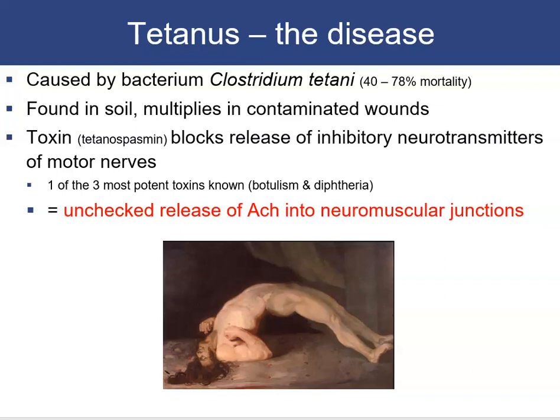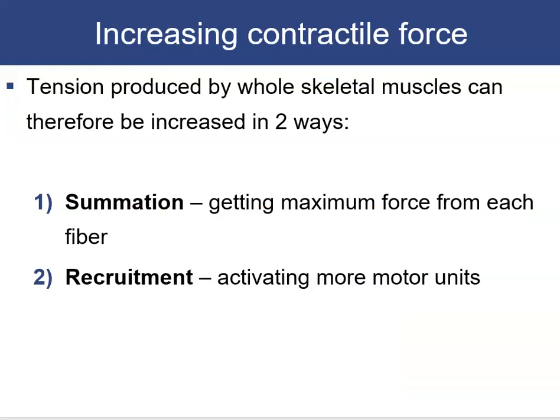Contractile force in a whole skeletal muscle can be increased two ways: summation — getting maximum force from each individual fiber — and recruitment, which means activating more motor units. Each motor unit has its own threshold. To increase force you recruit more motor units; maximum tension occurs when all motor units reach tetanus.